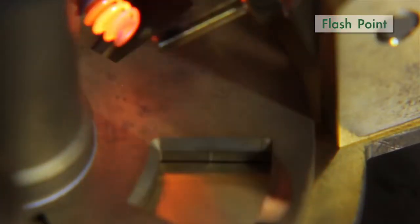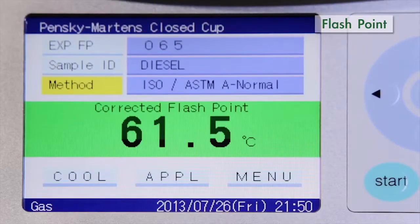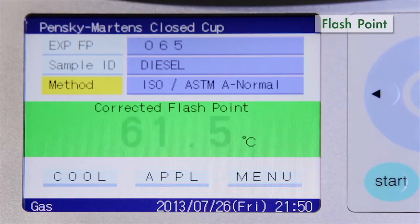Once flash is detected, the ignition source automatically shuts off with the corrected flashpoint displayed on the screen against a green background.